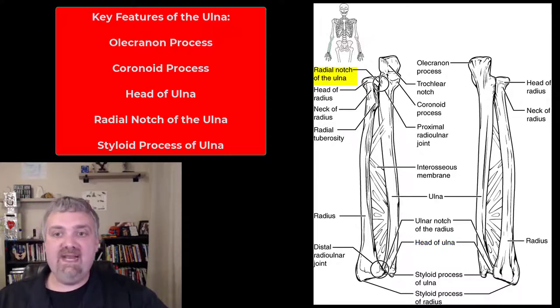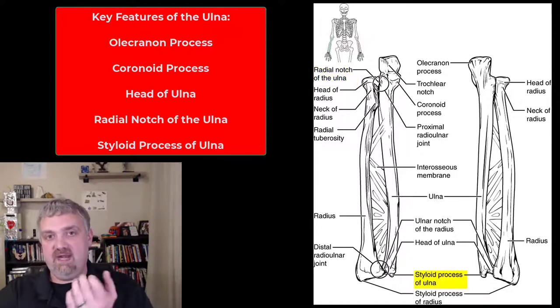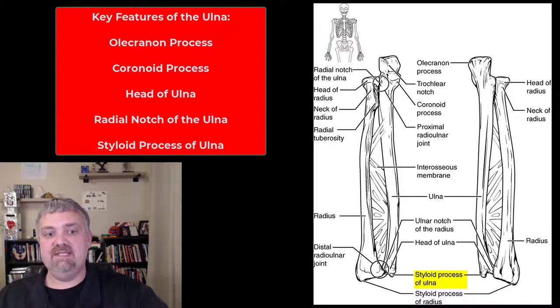The radial notch. Remember the radius has an ulnar notch and the ulna has a radial notch, and then we have the styloid process which I already mentioned before kind of brackets the carpal bones, your wrist down there.